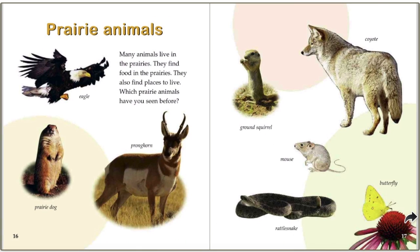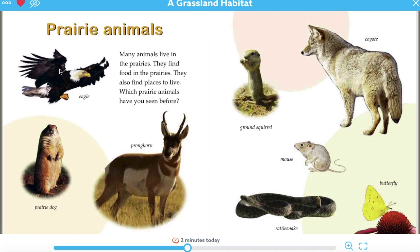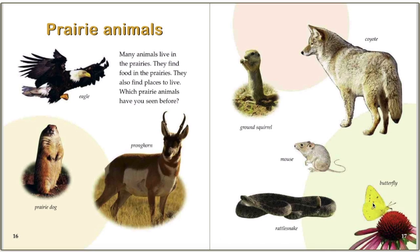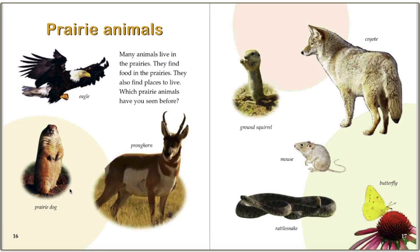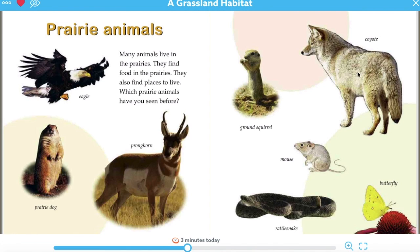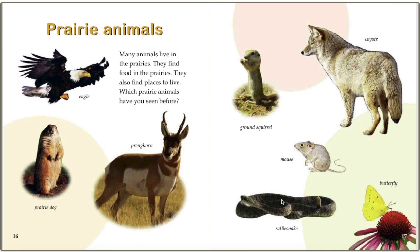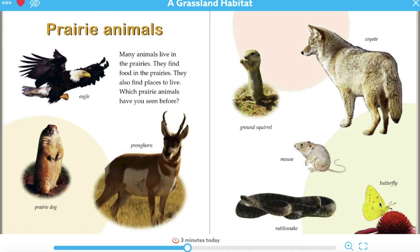Many animals live in the prairies. They find food there and also find places to live. Which prairie animals have you seen before? On these two pages we have eight different animals that live in the grasslands: an eagle, a prairie dog, a pronghorn, a ground squirrel, a coyote, a mouse, a rattlesnake, and a butterfly.